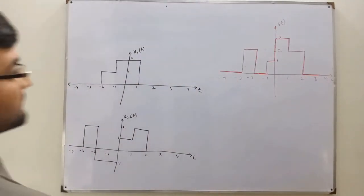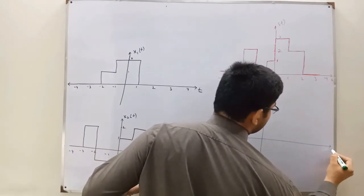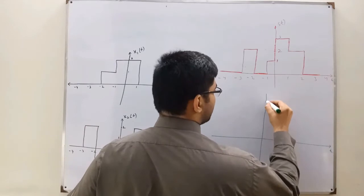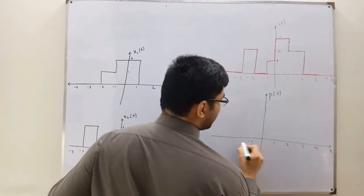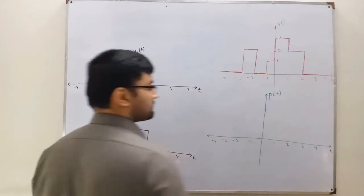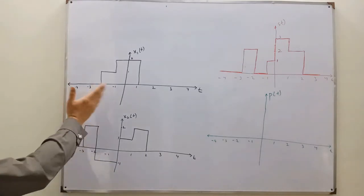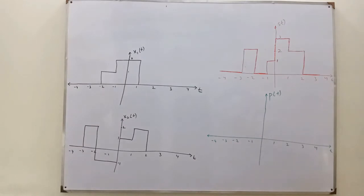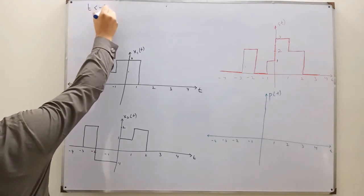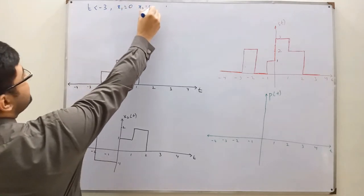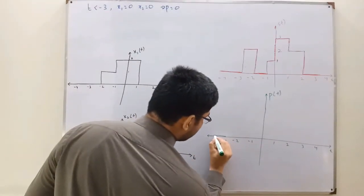The next is the product, represented in green color as P(t). The time axis goes 1, 2, 3, 4 and negative 1, negative 2, negative 3, negative 4. When t is less than negative 3, both x1 and x2 are 0, so 0 multiplied by 0 — the product is 0. Beyond negative 3 it stays 0.